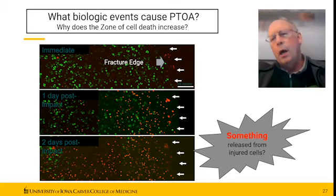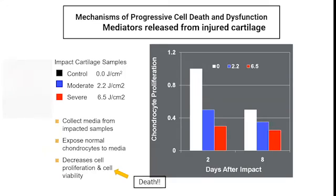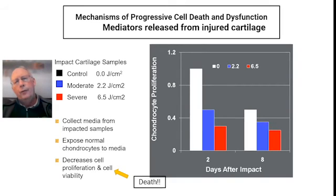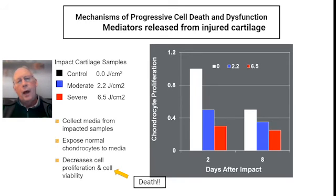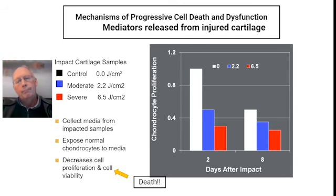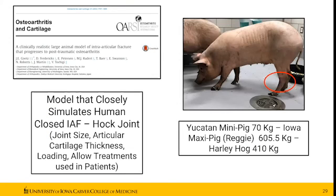You could say maybe it's just partially injured cells going on to die — which is why I like this experiment. This is impacting cartilage, taking the impacted media and putting it in normal cells that have not been impacted. And in the blue and the red, the severity of impaction makes a difference in the chondrocyte proliferation of the uninjured cartilage cells — again the implication that there's something in the injury that's causing this progressive zone of cell death, and again opening the possibility that we can do something about it.